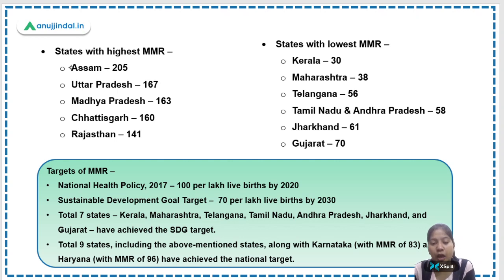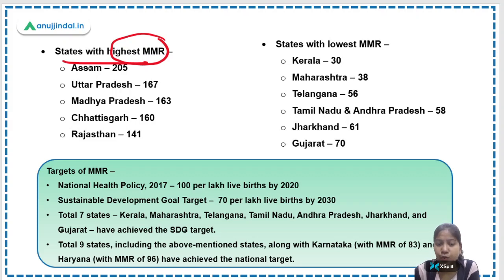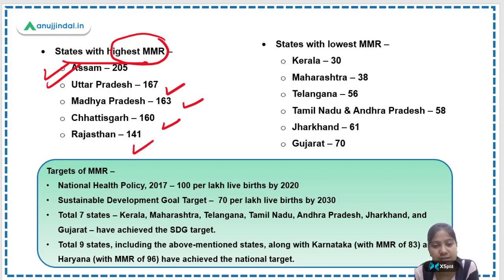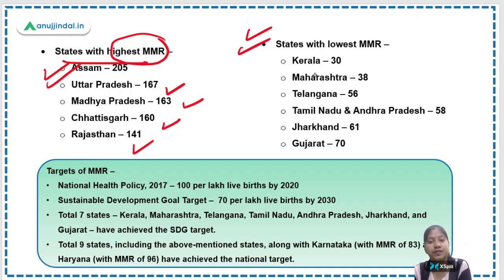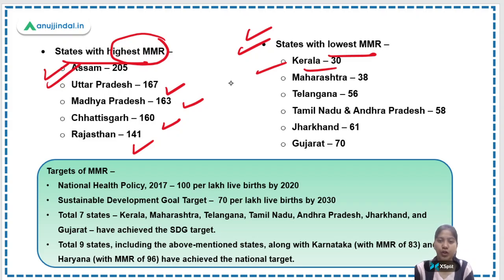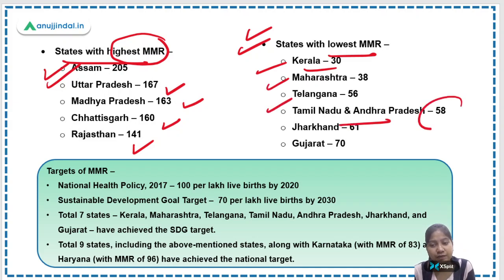Among the states with the highest maternal mortality ratio, Assam is at the top with 205 MMR, followed by Uttar Pradesh at 167, Madhya Pradesh at 163, Chhattisgarh at 160, and Rajasthan at 141. For the lowest MMR, Kerala stands first, followed by Maharashtra, Telangana, Tamil Nadu, Andhra Pradesh, Jharkhand, and Gujarat.